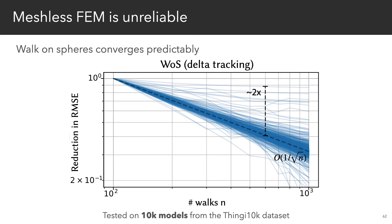In contrast, walk-on spheres demonstrates very predictable convergence on all 10,000 models in the same dataset.